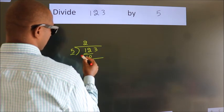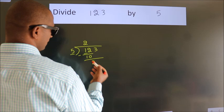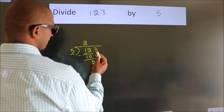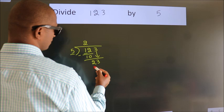Now we subtract and get 2. After this, bring down the next number. 3 down, so 23.